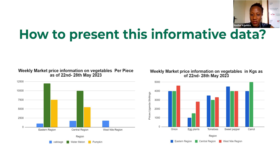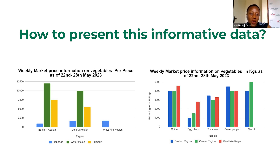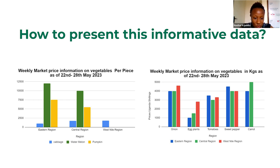Since we operate in various regions in Uganda — Eastern, Central, West Nile, and North region — the first graph has vegetables that are not all measured in kilograms. Like cabbage, watermelon, and pumpkin — we don't measure those in kilograms; it's either per piece or per head. Graph one showcases the prices of cabbage, watermelon, and pumpkin in various regions. You realize we have Eastern, Central, and West Nile. The graph in blue is cabbage, and you realize that the prices are relatively the same, with West Nile showing almost the same prices as the Central region.